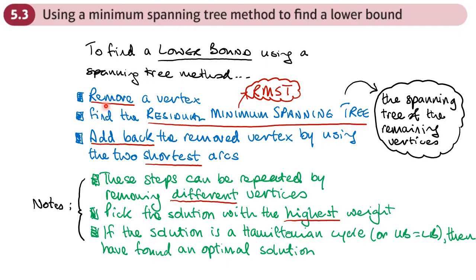In practice, if you're doing this manually, you're not going to be asked to remove lots of different vertices — that would take ages. A question will probably tell you which vertex to remove. Now, if our solution is a Hamiltonian cycle — it goes to every vertex and starts and finishes in the same place — or our upper bound equals our lower bound, then we have found an optimal solution.